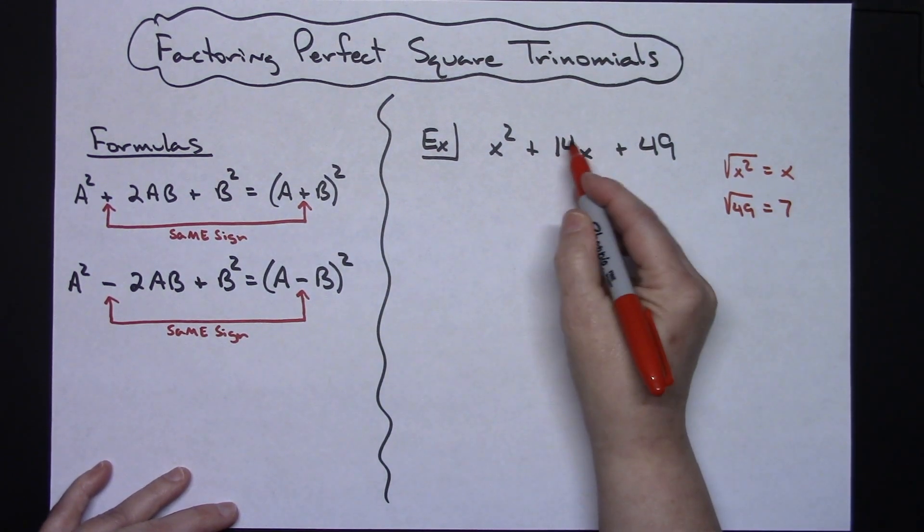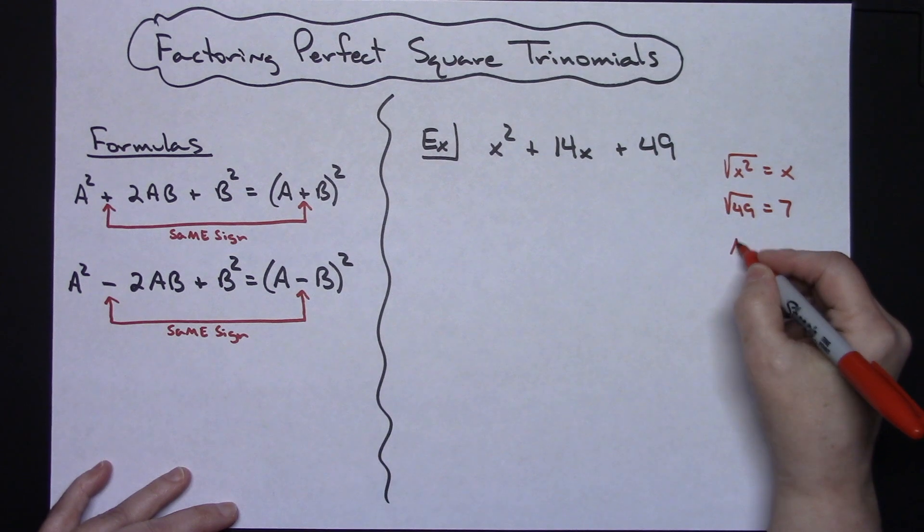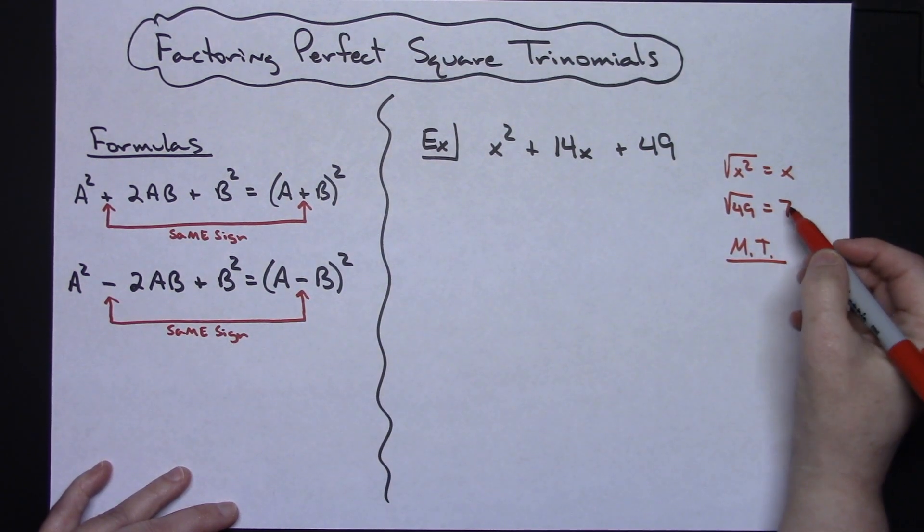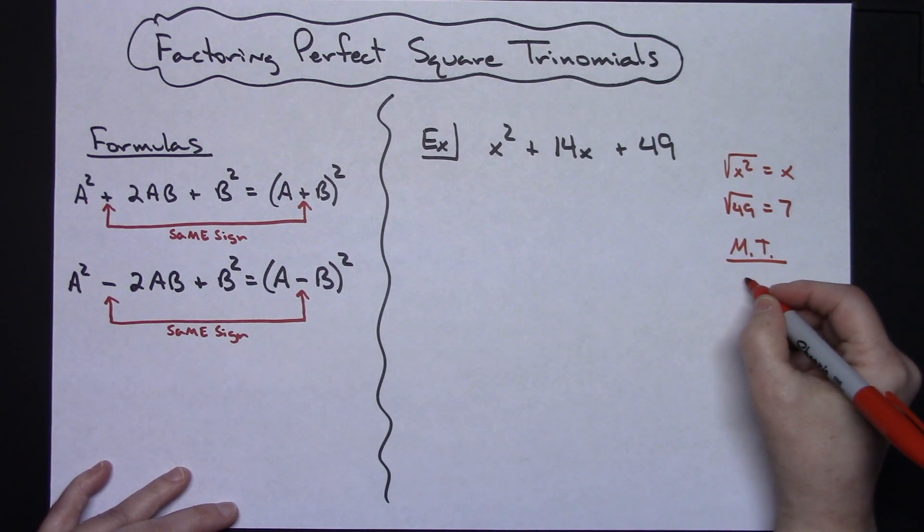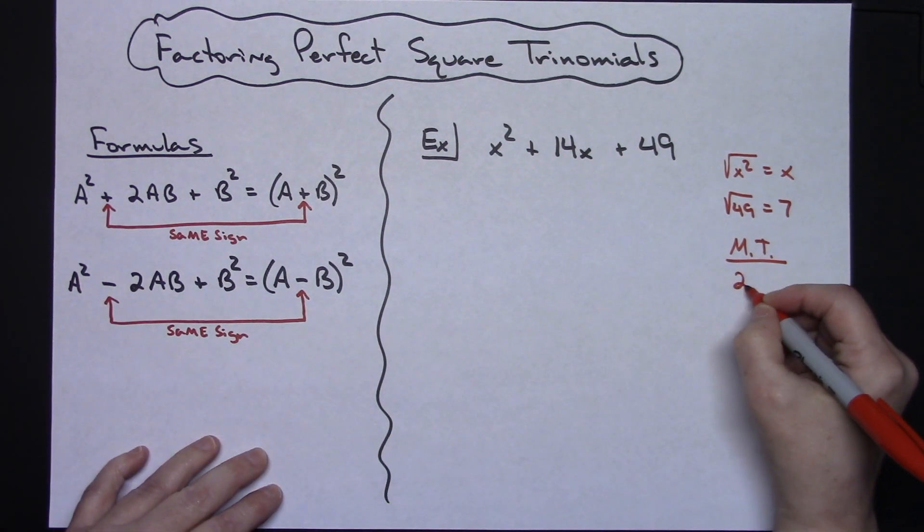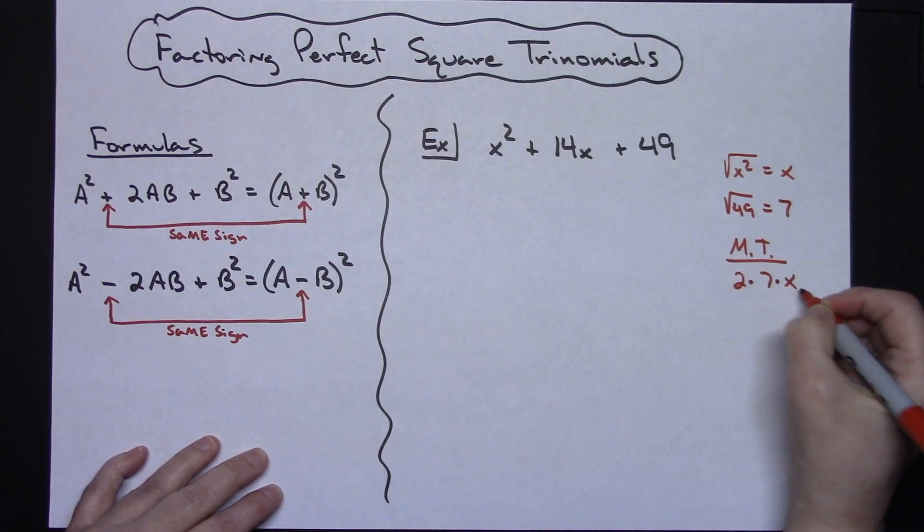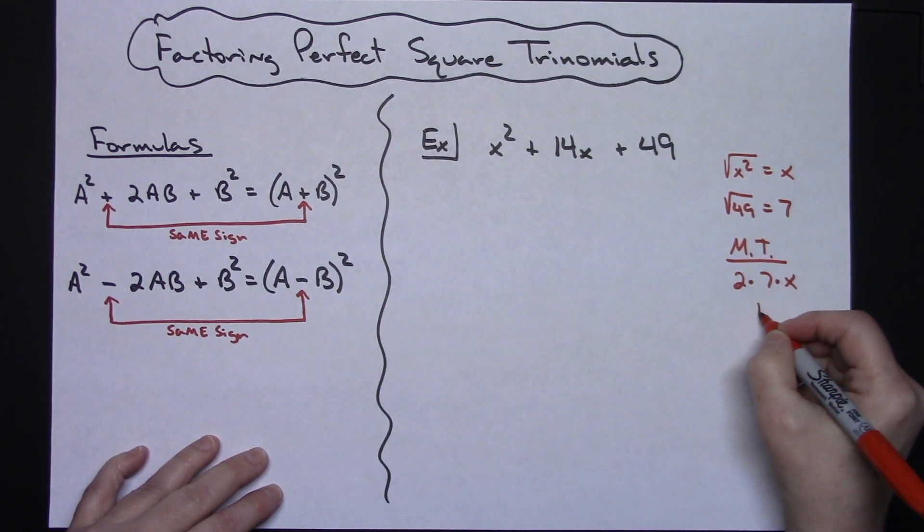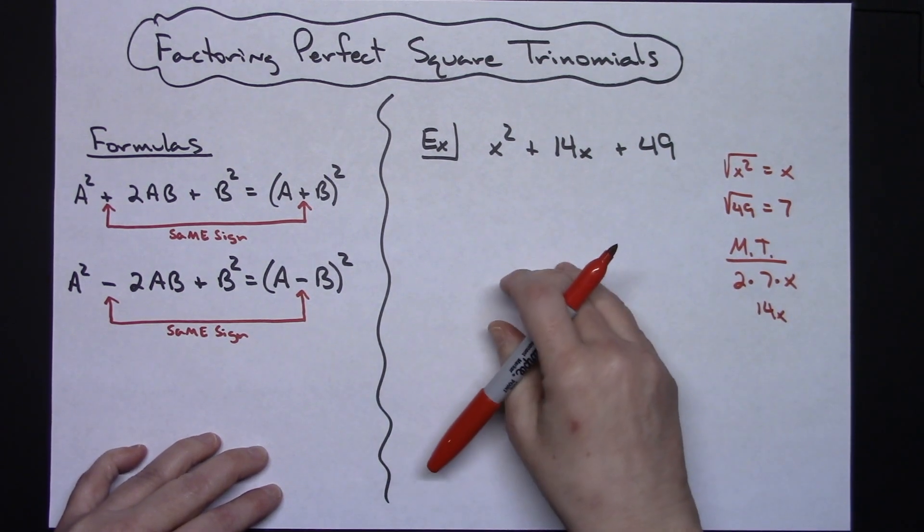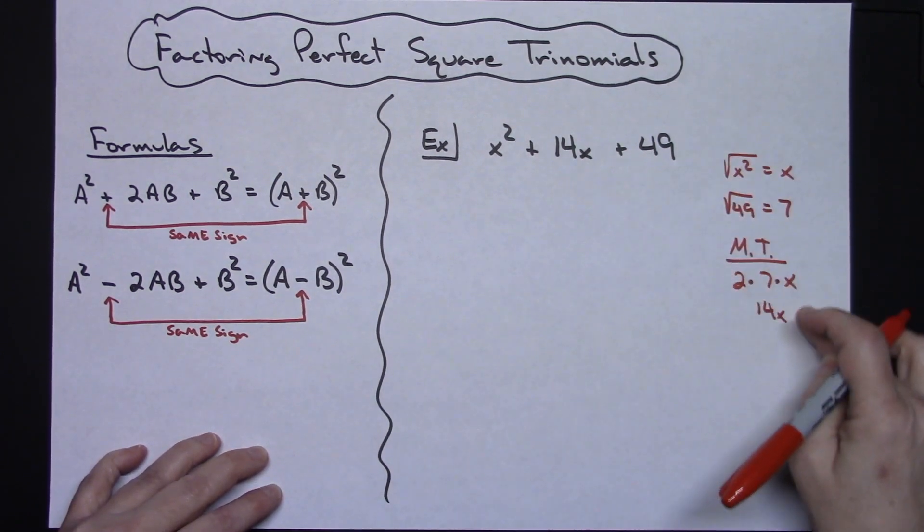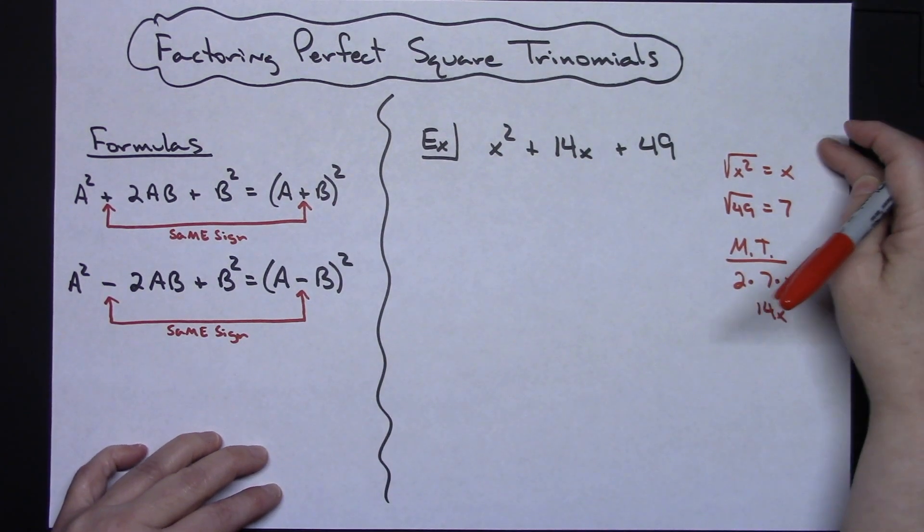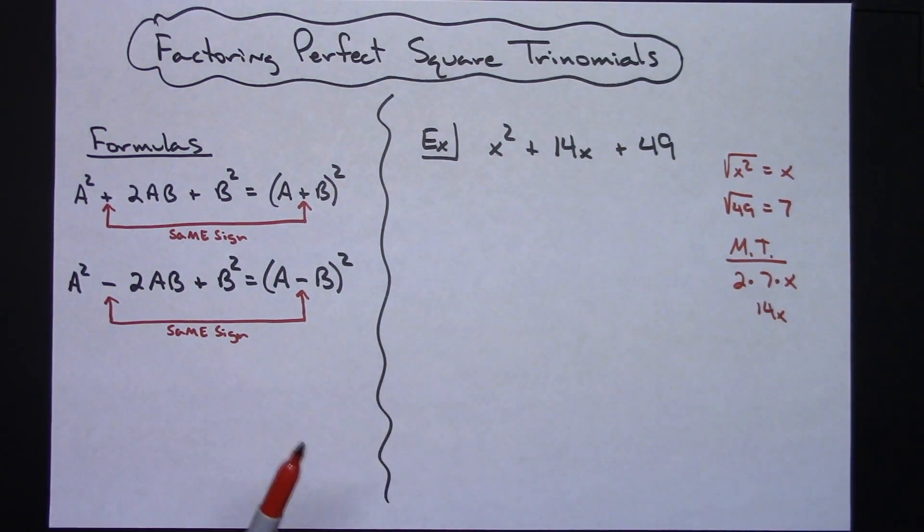And then I have to check that middle term. Is my middle term - can I take the x times the 7 and then multiply it by 2, because that's what's in my formula. So 2 times the 7 times the x and will I get a 14x in the middle, and I do. So this is a perfect square trinomial. Now eventually you would get to the place where you would not write this out, it would just come naturally, you could just check those things and do it in your head.